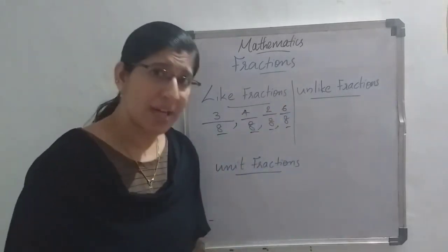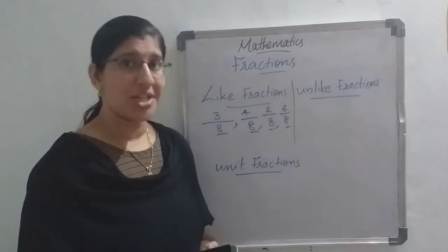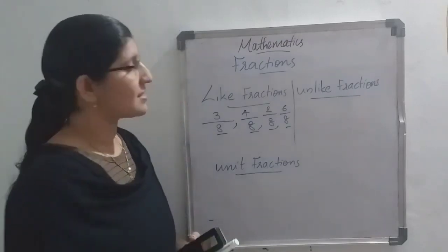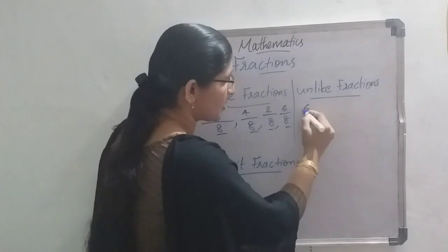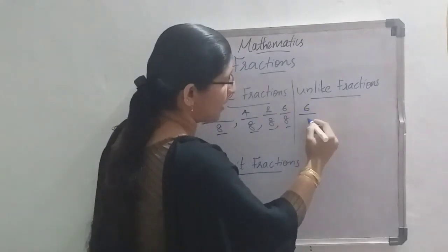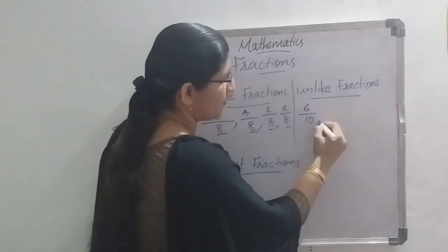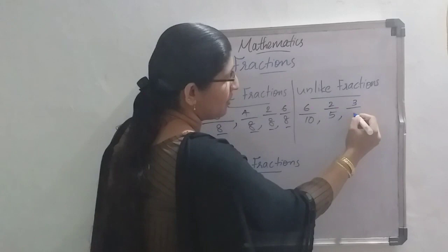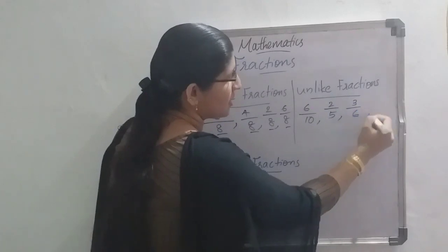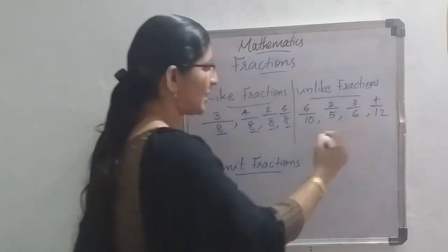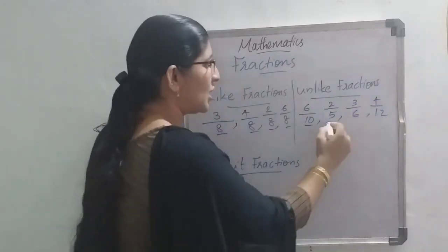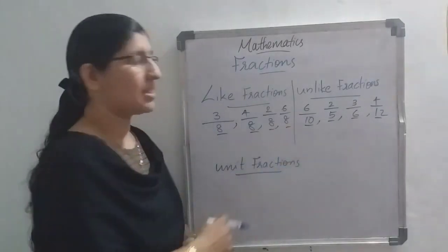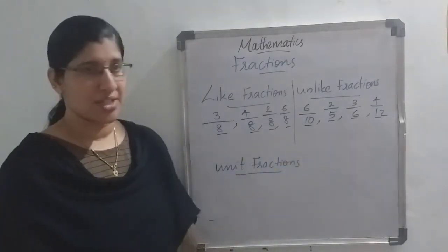What are unlike fractions? The fractions which have different denominators are called unlike fractions. For example: 6 by 10, 2 by 5, 3 by 6, 4 by 12. Here all the denominators are different, so this type of fraction is called unlike fractions.